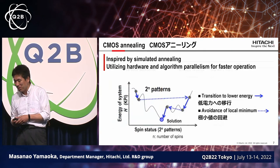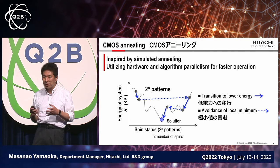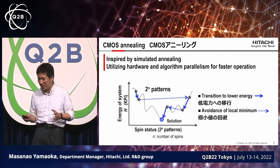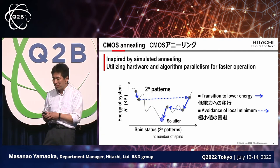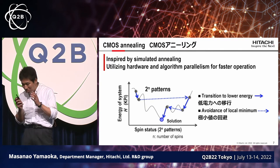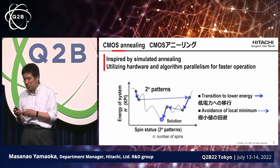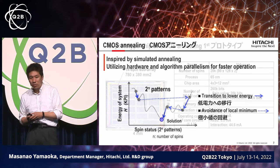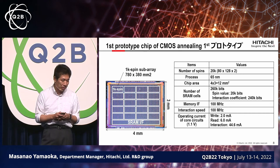So what is CMOS annealing? As others have been talking about, you take the optimization problem, put it into the Ising model, and find the lowest energy state — that is the optimization. We have simulated annealing: inspired by quantum annealing, and in terms of the hardware algorithm we want to use the parallelism of that approach to find the low energy state as quickly as possible. That is the essence of CMOS annealing.